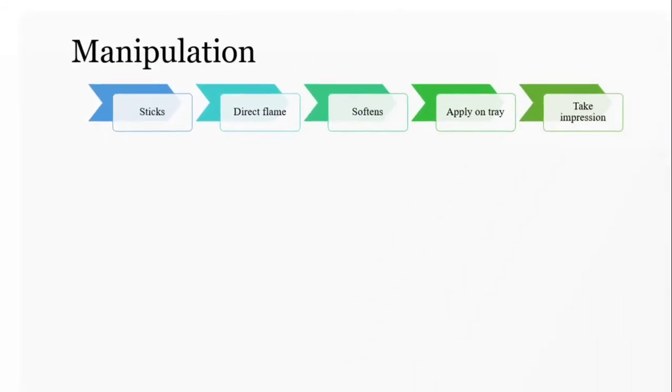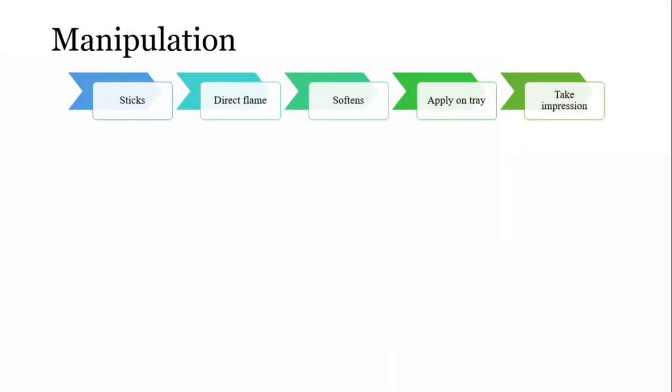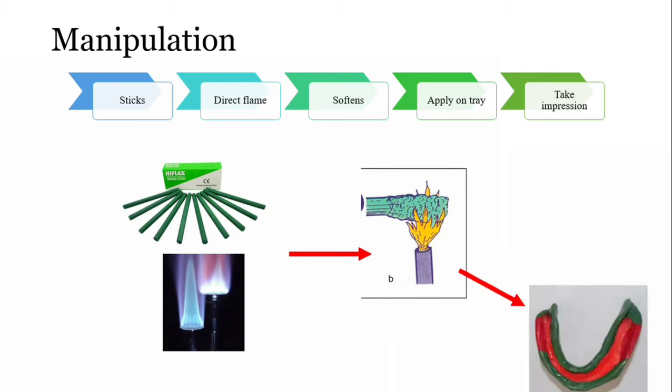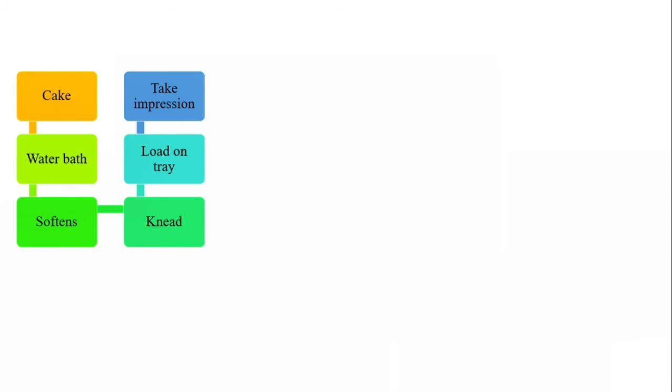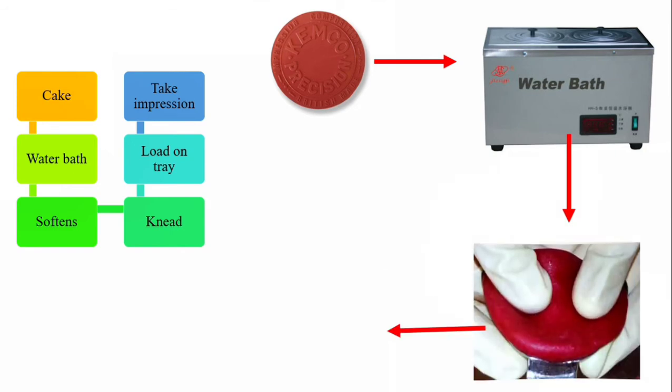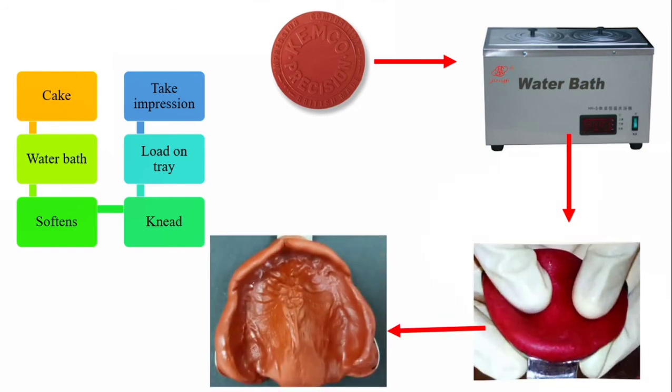How do you manipulate these materials? For a stick material—green stick compound—you soften it under direct flame. Make sure you don't burn or ignite it, or it will lose the plasticizer and won't mold properly, becoming brittle. Then apply it on the tray and take the impression. For a cake type of impression compound, you first put it in a water bath, soften it, knead it, then load it on the tray and take the impression. This is how the process is performed in a clinical setup.